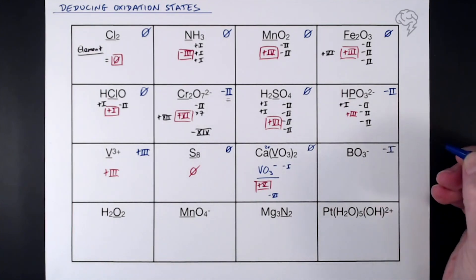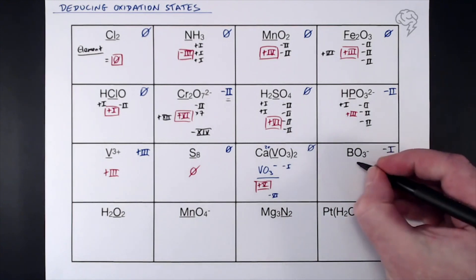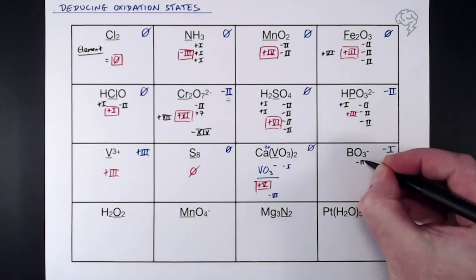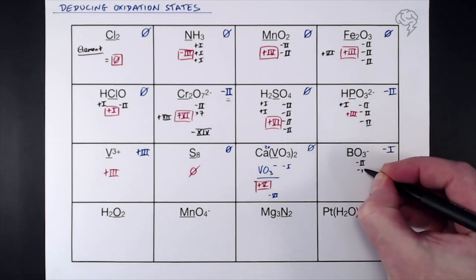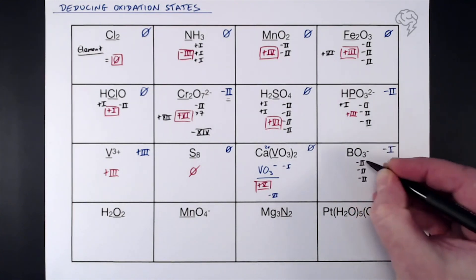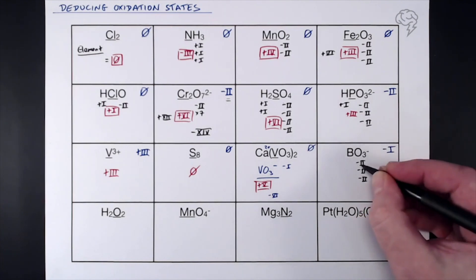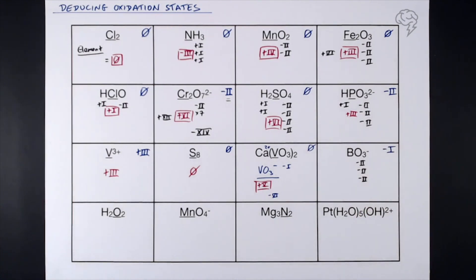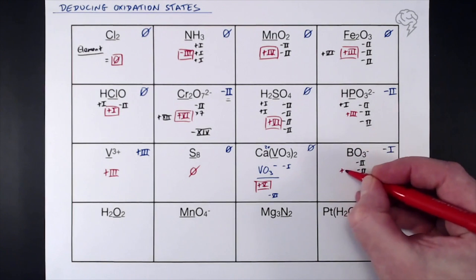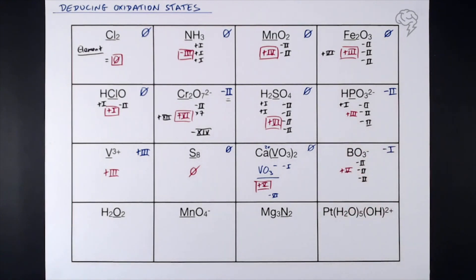BO₃⁻ — overall oxidation state is −1. We've got three lots of oxygen: 3 × (−2) = −6. The difference between −6 and −1 is +5, so the oxidation state of boron is +5.